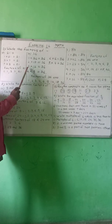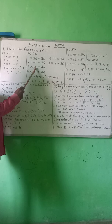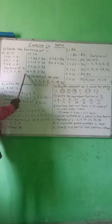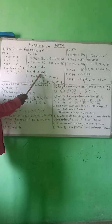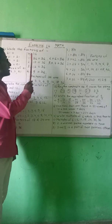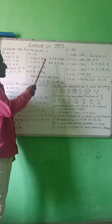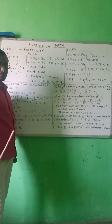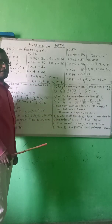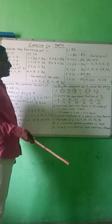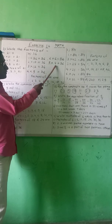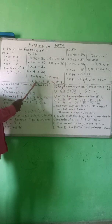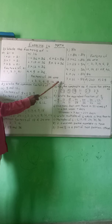Then, 4 multiplied by 9 is 36, so 4 is a factor. In the 5 times table, 36 is not present, so we don't take 5. Then 6 multiplied by 6 is 36. In the 7th and 8th times tables, 36 is not present. In the 9th times table, 36 is present: 9 fours are 36. Therefore, the factors of 36 are 1, 2, 3, 4, 6, 9, 12, 18, and 36.